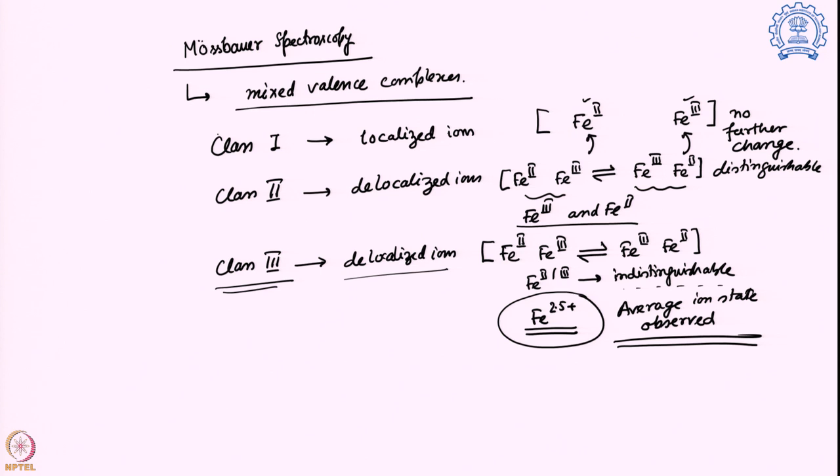These are the three different systems we looked into. We examined certain iron complex examples and found Class 1, Class 2, and Class 3 kinds of mixed valence complexes. These complexes are very unique for their multiple applications, and an important question is: can I find out whether a compound belongs to Class 1, Class 2, or Class 3? For this we need spectroscopic experiments that provide specific information on oxidation state, and Mössbauer spectroscopy is one of them.